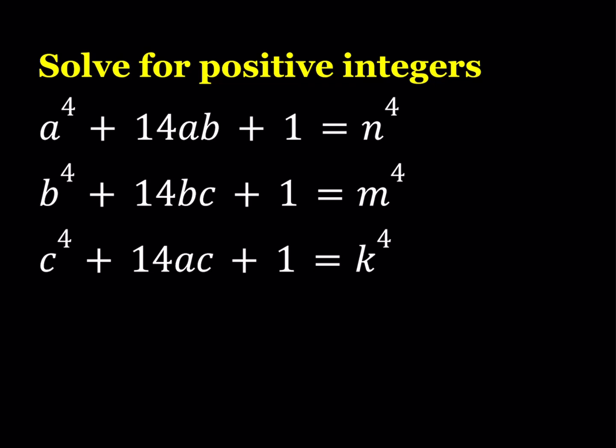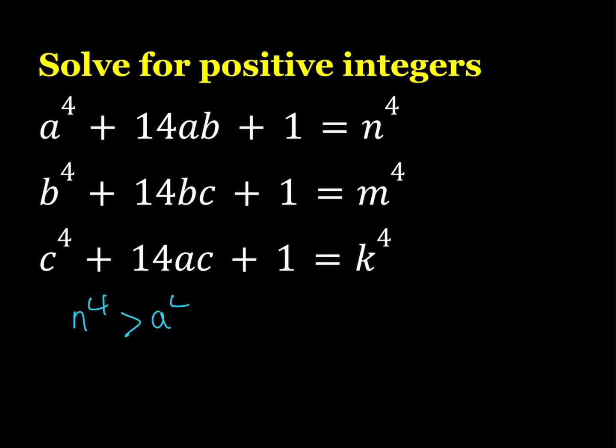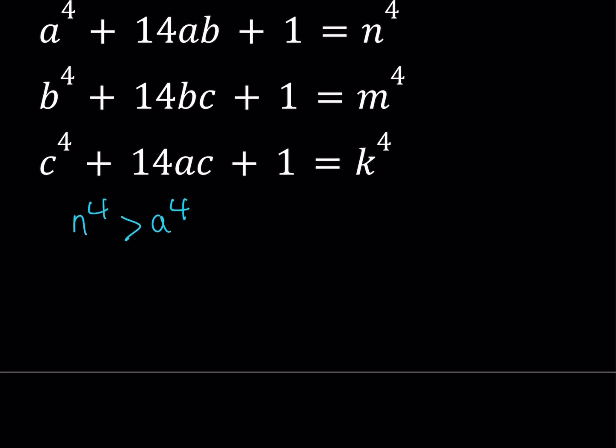Notice that we are looking for positive integers. So all the quantities here are positive, and the left-hand side, which is n to the fourth power, contains a to the fourth power. So I can safely say that n to the fourth power is greater than a to the fourth power, because it contains a to the fourth and some other positive terms. So this implies that n is greater than a. Similarly, we can say the same thing for m greater than b, and k being greater than c.